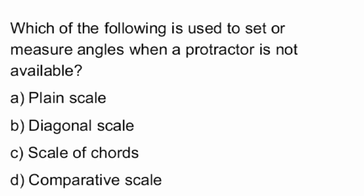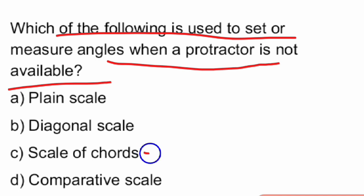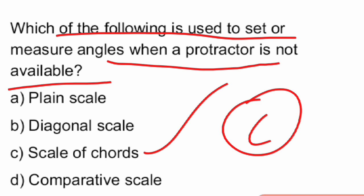Next: which of the following is used to set or measure angles when a protractor is not available? It is the scale of chords. Option C, scale of chords.